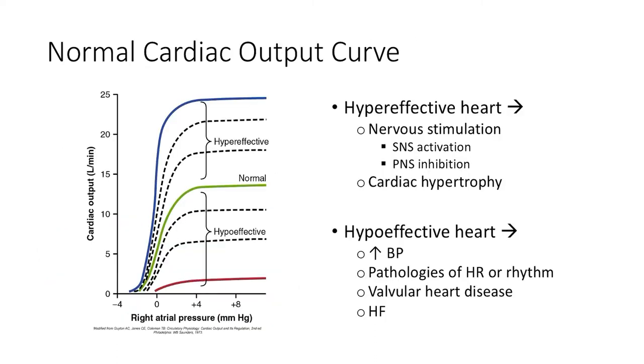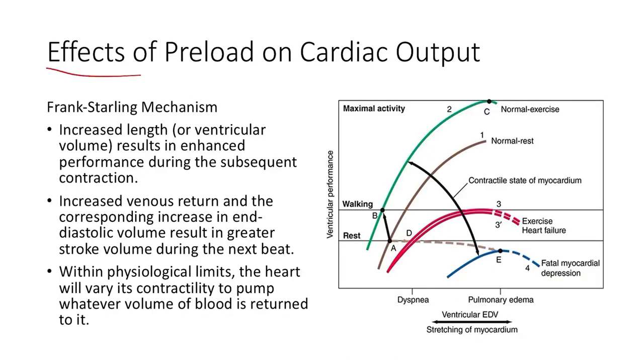So one thing to kind of look at as well, the influence of the nervous system on pumping performance here. We're just showing the effects of different stimulations, sympathetic nervous system, parasympathetic nervous system effect on cardiac output. Not going to focus a ton on this, but just gives you a plot showing how we can shift pumping performance to be more efficient under sympathetic nervous system activation to improve cardiac output at a given arterial pressure, which kind of reflects preload.